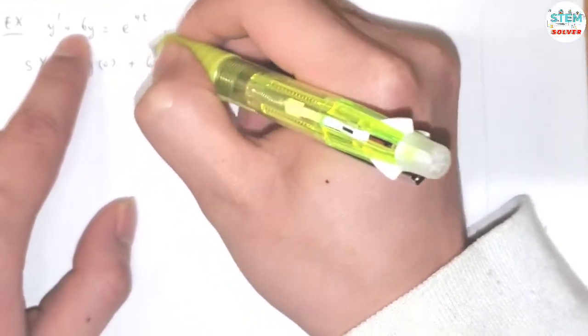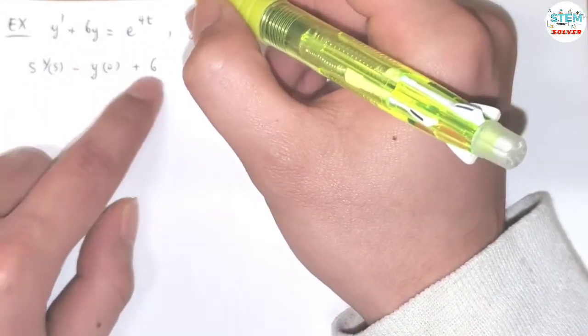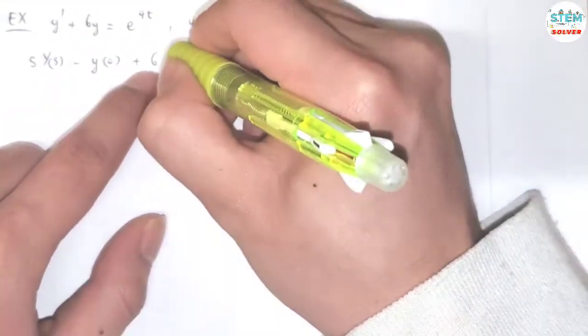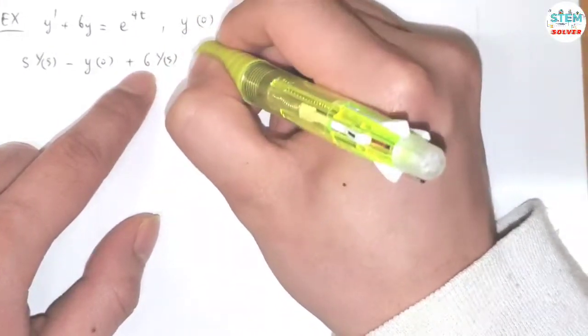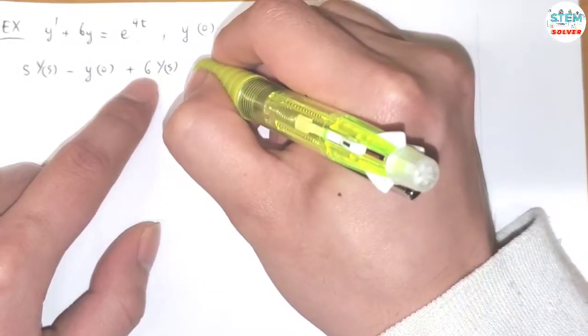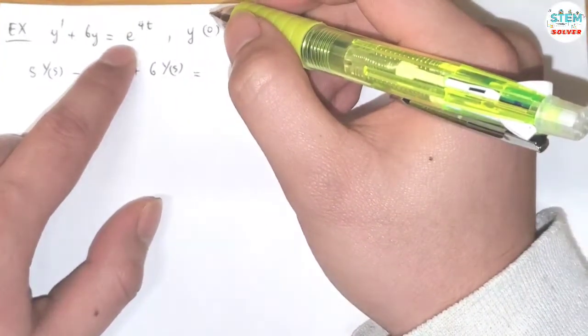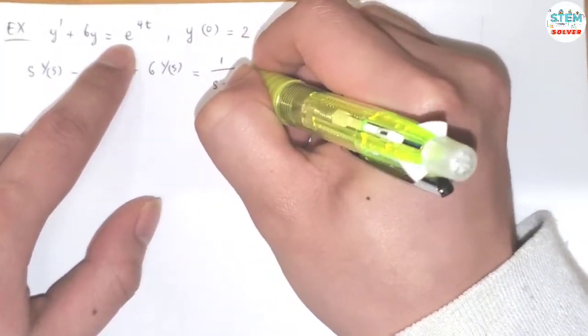Plus 6, so you have Y, just Y, then you don't need to have S, you only need to have capital Y of S, then it's already S to the 0, so you don't have to subtract anything else. It's equal to the Laplace transform of e to the 4t, which is 1 over S minus 4.